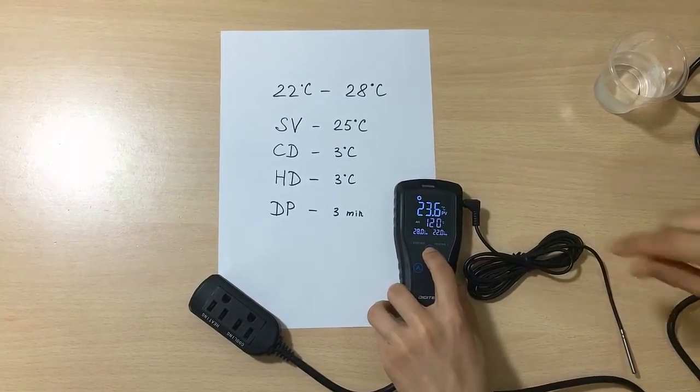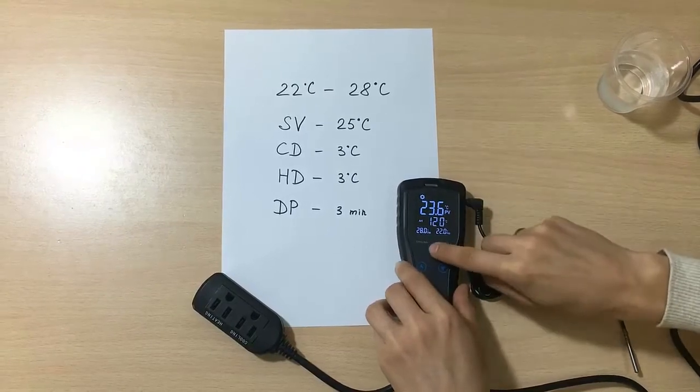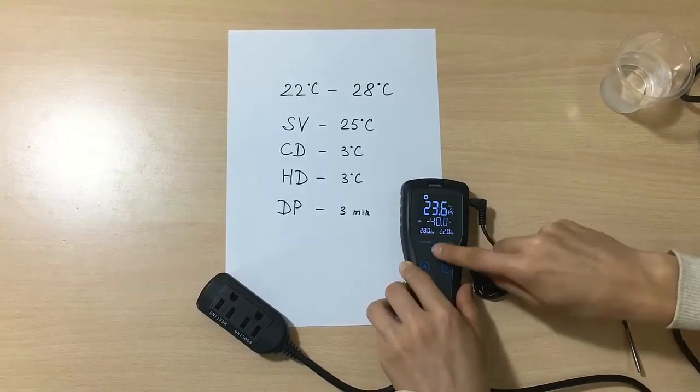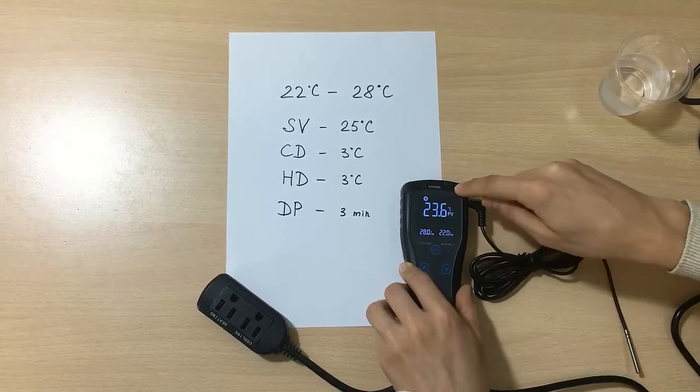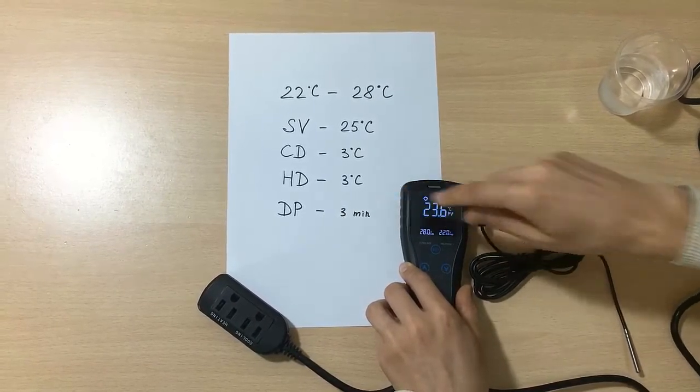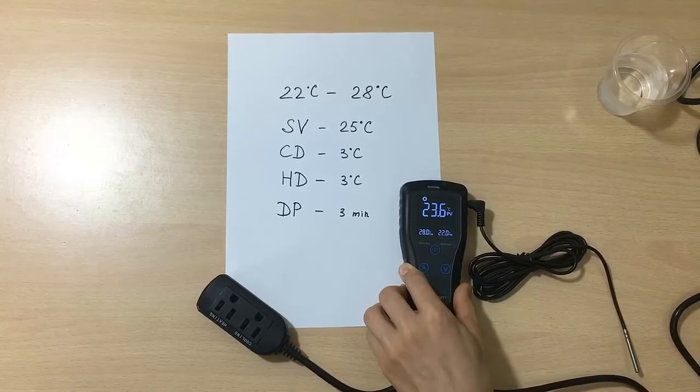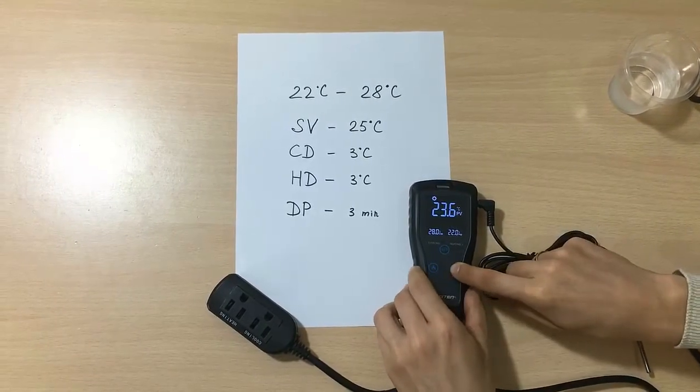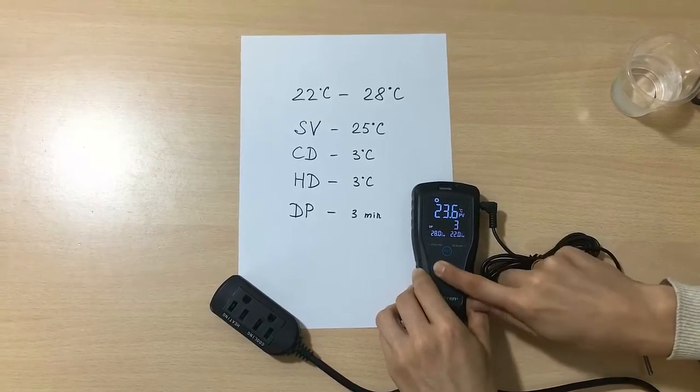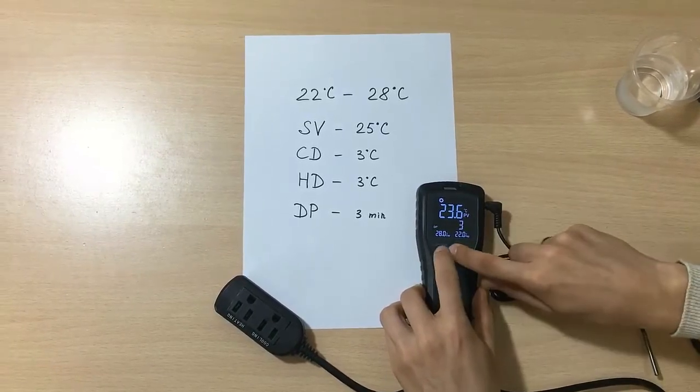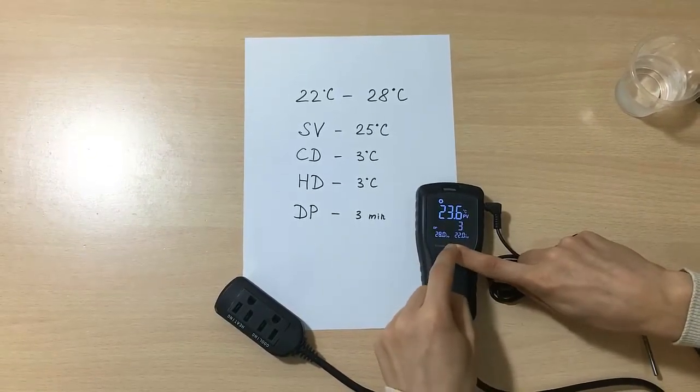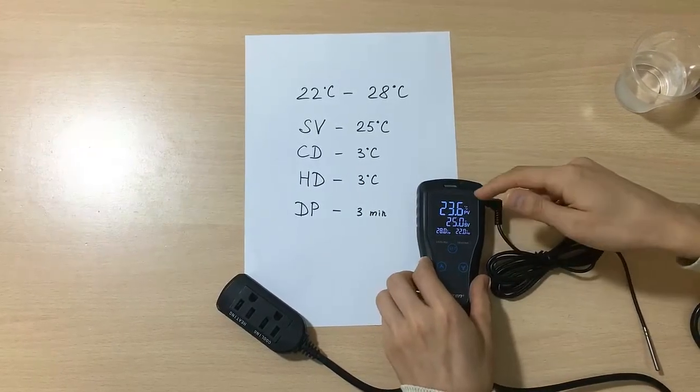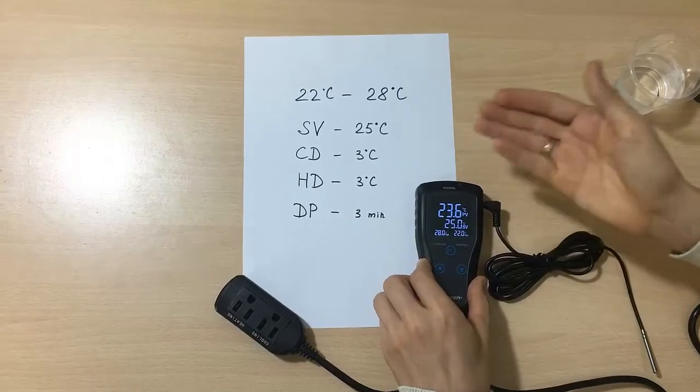AH, as you know, is high temperature alarm. We just don't change anything. As well as AL, the low temperature alarm, we don't change it right now. But now we are interested in DP, which is the time of compressor delay starting. We can change it to any minutes that we want: 2 minutes, 1 minute, 3 minutes, as you wish. And then after this, we have to long press the set button. And now we have the parameters that we need.